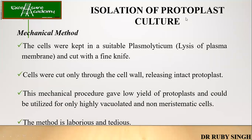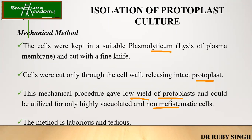Let's talk about the mechanical method. In this, the tissue is kept in a suitable plasmolyticum — that is, slices of plasma membrane — and it is cut with a fine knife. The cells are cut only through the cell wall, releasing the intact protoplast. The problem with the mechanical procedure is that it gives a low yield because the cell often disrupts. It can be utilized only for highly vacuolated and non-meristematic cells. Meristematic cells are young, fast-producing cells and won't have a thick cell wall, so they are disrupted easily. This method is laborious and tedious.